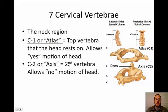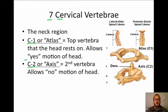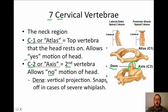The next bone is C2, also called the axis. An axis is the rotation point — the earth rotates on an axis, and your head rotates on this axis. The C2 allows the no motion of the head. It has a special feature called the dens, a vertical projection that articulates with a fossa on the atlas.